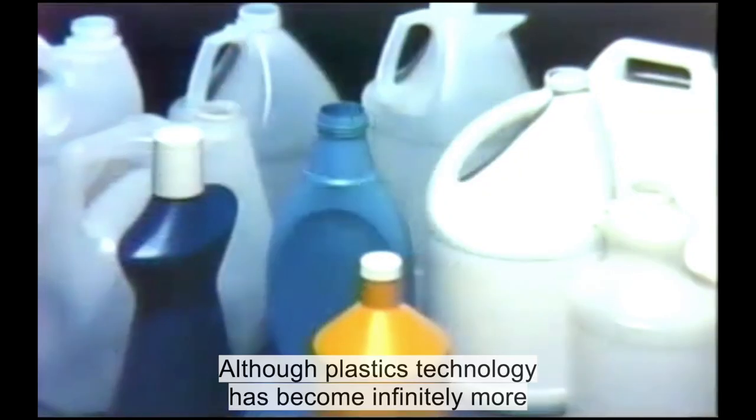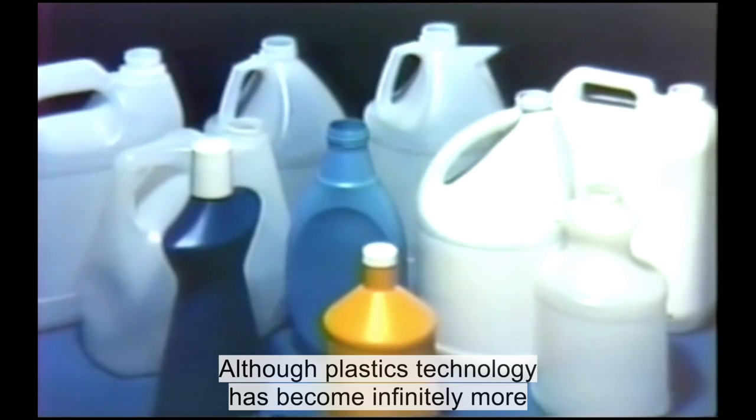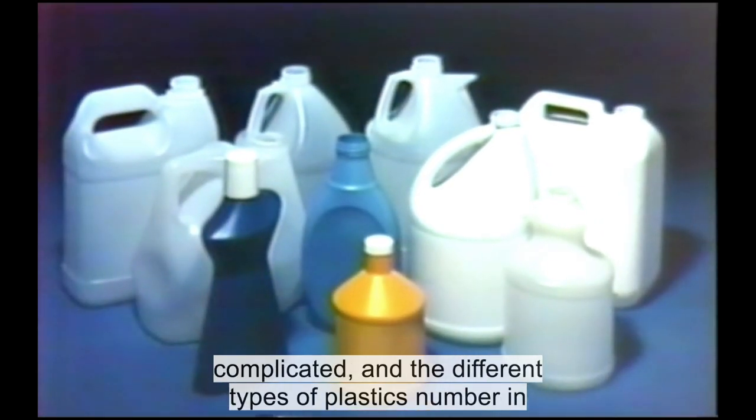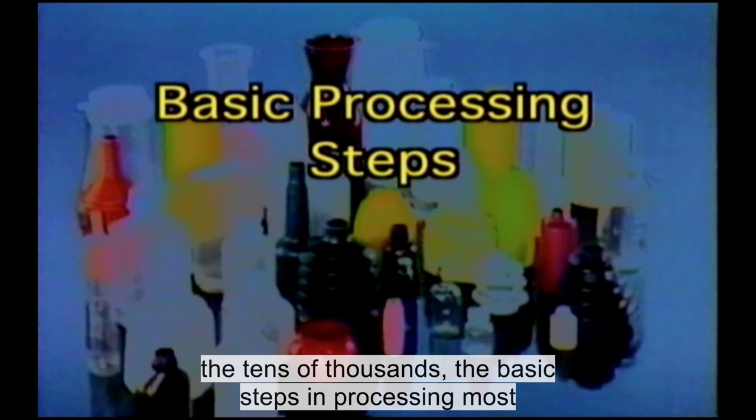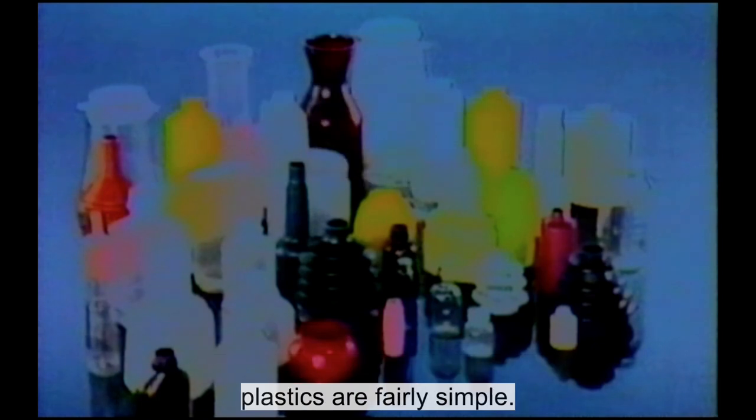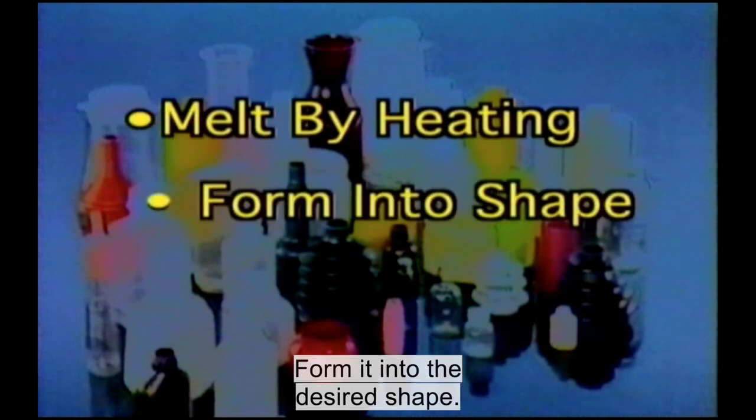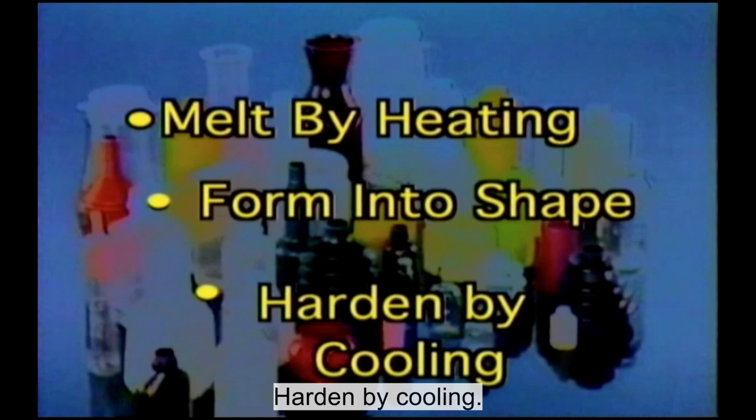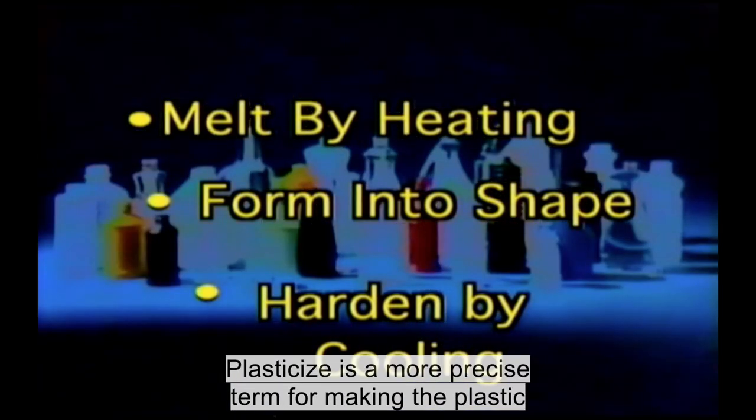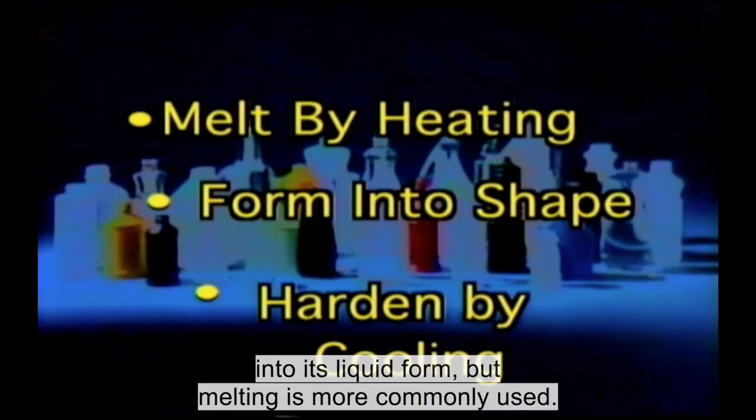Although plastics technology has become infinitely more complicated and the different types of plastics number in the tens of thousands, the basic steps in processing most plastics are fairly simple. Melt the plastic by heating, form it into the desired shape, harden by cooling. Plasticize is a more precise term for making the plastic into its liquid form, but melting is more commonly used.